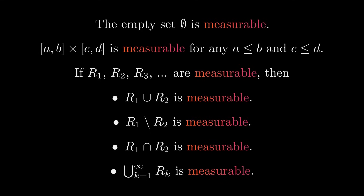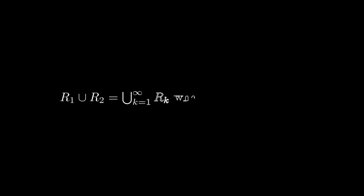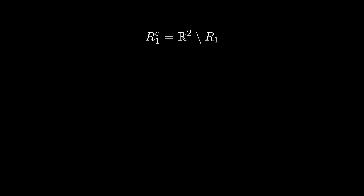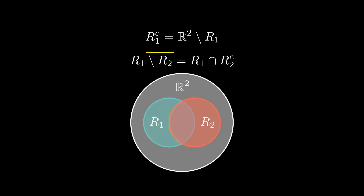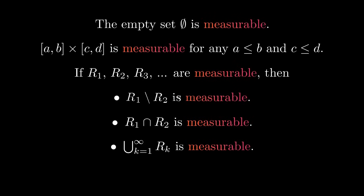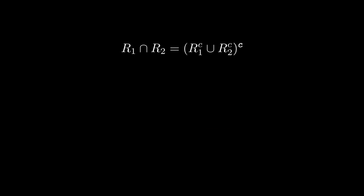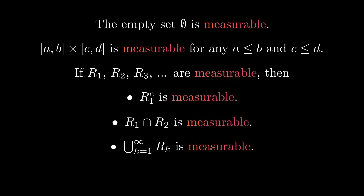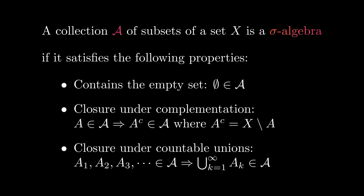If we want to generalize this, we should reduce these assumptions to as few as possible. We notice that the union of two sets is the same as the countable union if we let all sets of index higher than two be the empty set, so we don't need that assumption separately. Next, we can replace the difference with the complement, which is just the difference of the whole space with a set. Using the set identity between the difference and the complement, we see that we just need to assume the complement is measurable. The intersection reduces to the union and the complement. This leads us to the sigma algebra: a collection of subsets that contains the empty set and is closed under complementation and under countable unions.